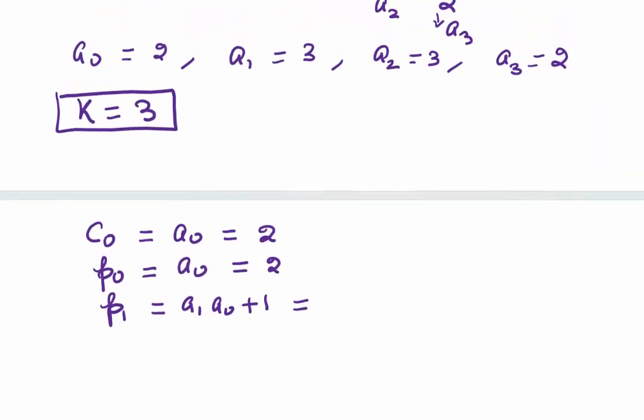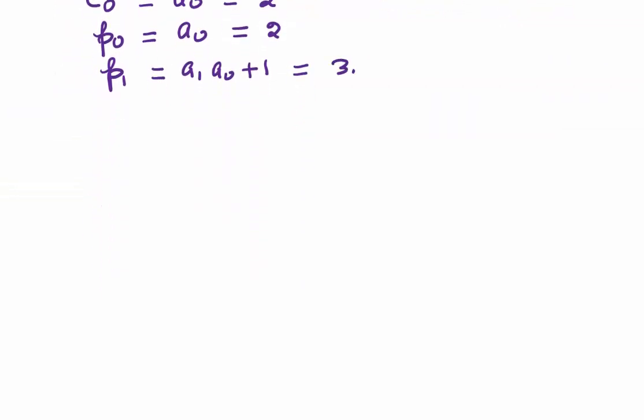Now, let's write our convergents. You have seen k value is 3, so we will start with C0. C0 is nothing but a0, and a0 value is 2. When we come to P0, you know that P0 is nothing but a0, so that is also 2. How about P1? For P1, we use the formula a1·a0 + 1, and a1 value is 3, so we have 3·2 + 1. P1 comes out to be 7.